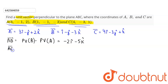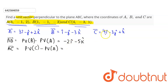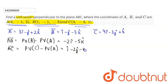Vector AC is given by position vector of C minus position vector of A. That gives 4i cap minus 3i cap, which is i cap. Then minus 3j cap plus j cap, which gives minus 2j cap. And the k cap component gives minus k cap.